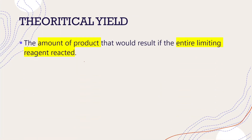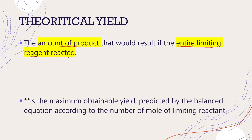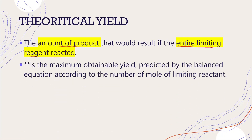So theoretical yield — what is it? This is the amount of product that would result if we calculate using the entire limiting reactant reacted. It is the maximum obtainable yield predicted by the equation according to the number of moles of limiting reactant. So if you have a certain amount of limiting reactant, what is the maximum product that you get?